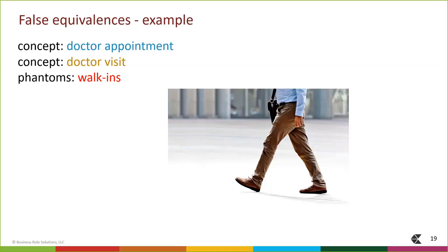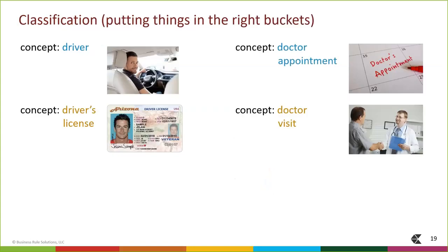Unsatisfied aspirations are how phantoms often arise in your data — wishing something would be one way, but it turns out not to be that way. The general topic of these examples is the notion of classification: putting things in the right conceptual bucket. What do you need for that? You need to work out compelling business definitions. If you can't tell me clearly what something is, directly and unambiguously, without exception, you have little or no hope of getting data designs right. It's just that simple.